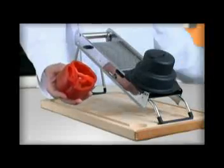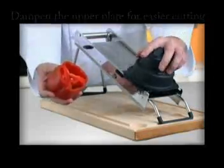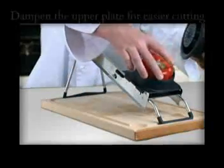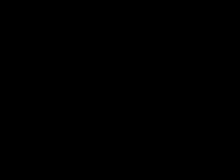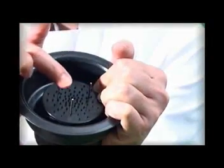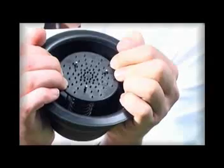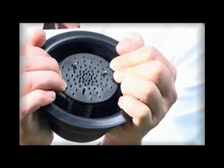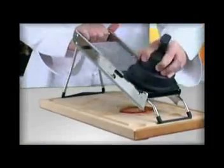After having adjusted the mandolin for the cutting you wish to do, place the food in the food receptacle. When you push the food pusher down on the food to be cut, the prongs penetrate it to prevent it from rolling away. And the spring applies constant pressure on them. You can then cut away with a simple to and fro movement.